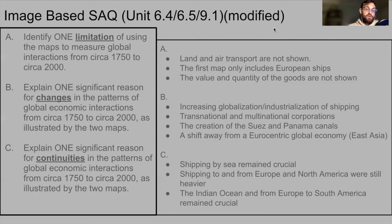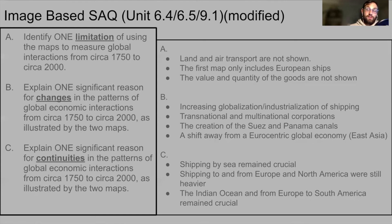In terms of reasons for continuity, shipping clearly remains very important. Shipping to and from Europe and North America is still really significant — if you look at the map, there's still a very heavy flow between them. Trade in the Indian Ocean and from Europe to South America still remains important. While there are some changes, especially in East Asia, a lot of those traditional trade routes still remain because industrial economies still need raw materials and people still need their coffee — and one of the biggest coffee producers is Brazil.